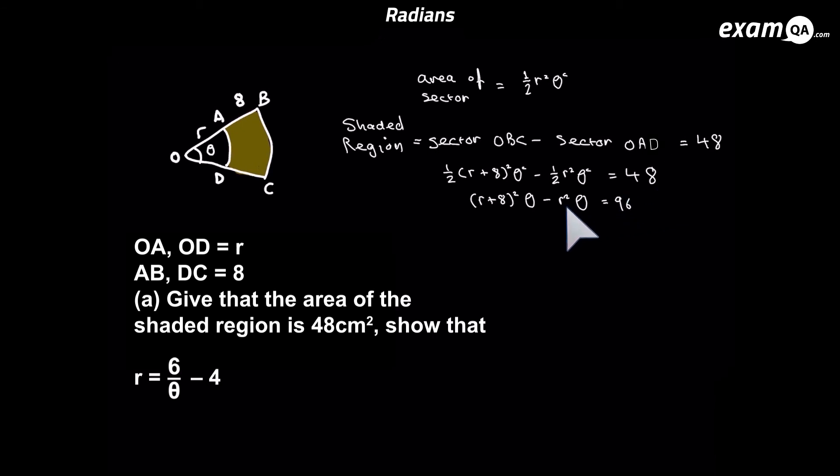Okay, just to simplify things, times everything by two to get rid of those halves. Now on the left hand side, we factorize out theta, just to tidy up a little bit. And what we can next do is open up the brackets inside and simplify it. Here you can see an r squared and a minus r squared. So the r squareds cancel off. Next, we'll divide both sides by theta. And now we simply need to make r the subject. So we'll take the 64 to the other side, and then finally divide both sides by 16. And we get what we needed to prove, r equals six over theta minus four.